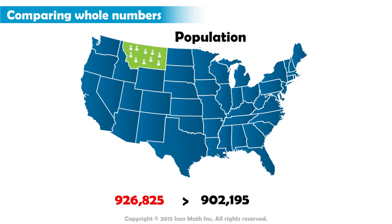So we get 926,825 is greater than 902,195.